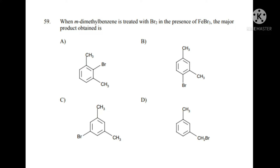Bromine can substitute in between the two CH3 groups — that is the ortho position. The second option is also an ortho position. Both CH3 groups are ortho/para directing, so we consider the ortho and para directing effects from both substituents.